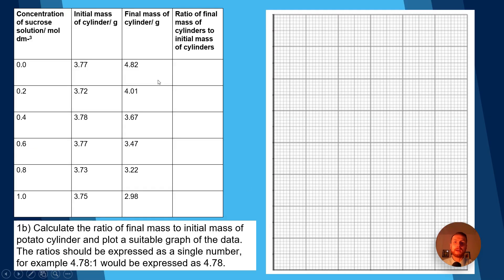Now I've copied across the table and we've got another example past paper question here. So in this question you had to calculate the ratio of final mass to initial mass of potato cylinder and plot a suitable graph of the data. The ratio should be expressed as a single number, for example 4.78 to 1 would be expressed as 4.78. So have a think about this now, pause the video, write down some answers, have a bit of a practice here. Let's go through it. So the first one, we do the change divided by the initial times 100, and that gives us 1.28. The next one, the change divided by the initial times 100 would give us 1.08.